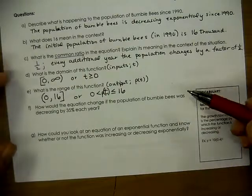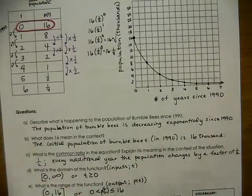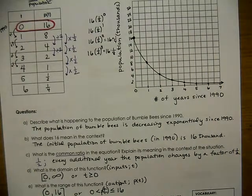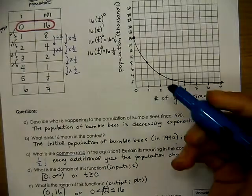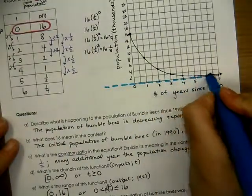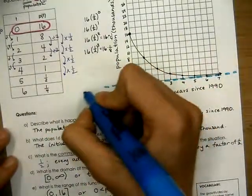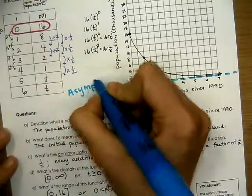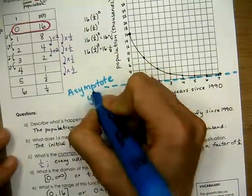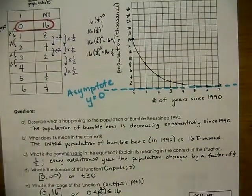Before moving on, I want to talk about the range in relation to the graph approaching the x-axis but never actually reaching it. There's a special name for the line that an exponential function approaches but never crosses — it's called an asymptote. I draw it as a dashed line so we can see it without it being part of the function. In this function, the asymptote equation is y equals zero — a horizontal line where y is zero.